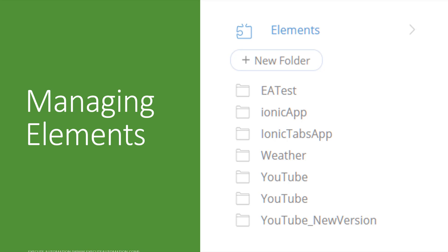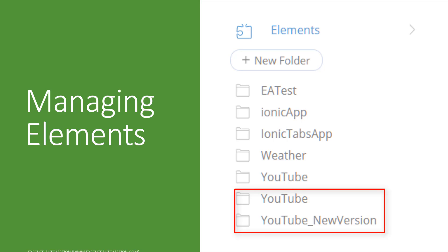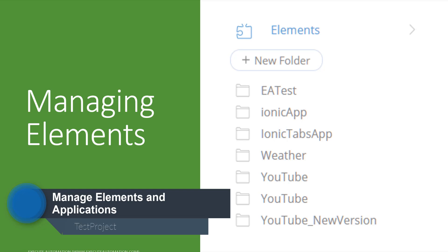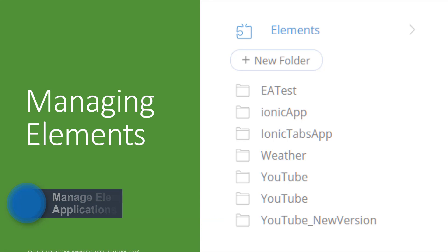As our applications in Test Project grow, all the elements will be located in a section called 'Elements,' which contains all the elements related to the application chosen while creating a test. For instance, in our previous videos we created the Ionic Tabs app and tested YouTube as well. You can manage all these elements in one place, like an element repository, instead of going through each test to modify element identification properties.